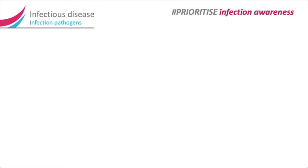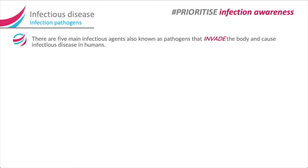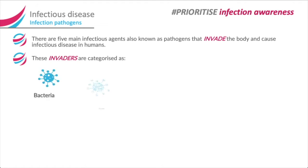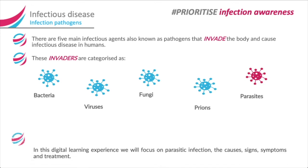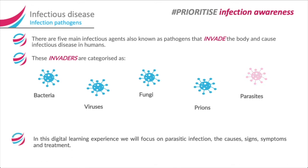Infectious disease — infection pathogens. There are five main infectious agents, also known as pathogens, that invade the body and cause infectious disease in humans. These invaders are categorised as bacteria, viruses, fungi, prions, and parasites. In this digital learning experience, we will focus on parasitic infection.